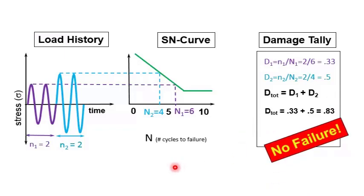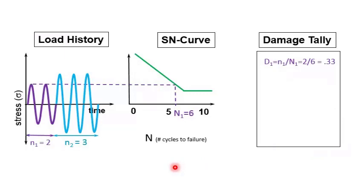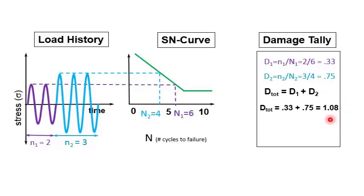All right, let's add another cycle. So here we have three cycles at this higher stress level, three out of four. If we look at our new tally here, we have 0.75 plus 0.33, and we would find that we have a total of 1.08. And guess what? Failure occurs, at least according to Miner's Rule.